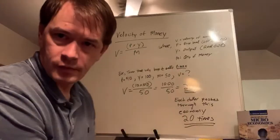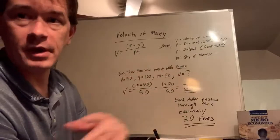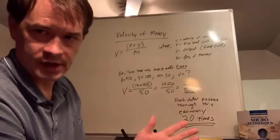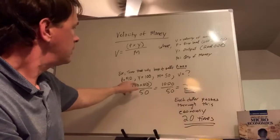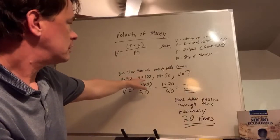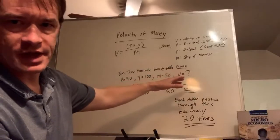Let's use a very simple example. Take a town that only buys and sells pizza—my kind of town. Let's say the price of pizza is $10, the output every year is 100 pizzas, and there's $50 in the economy. What is the velocity?